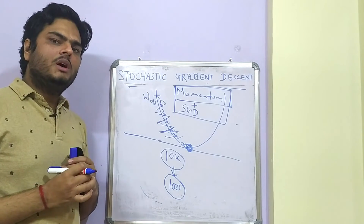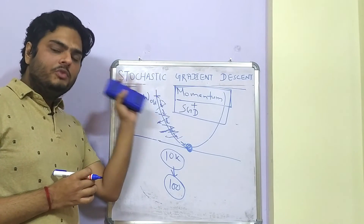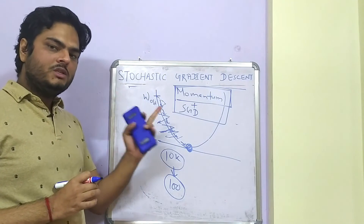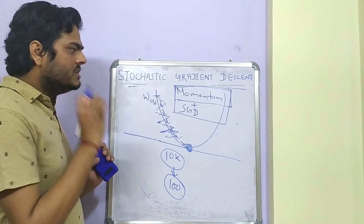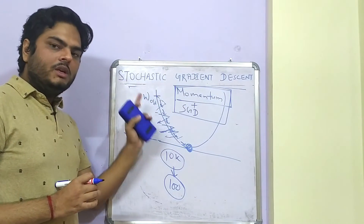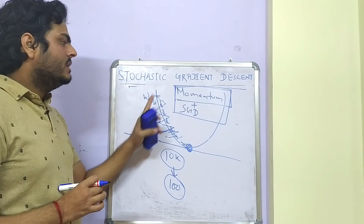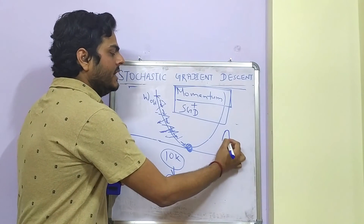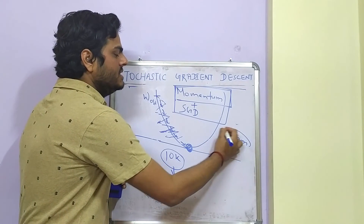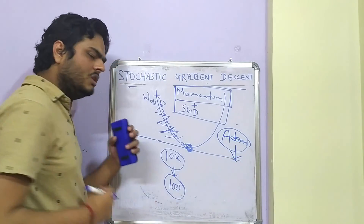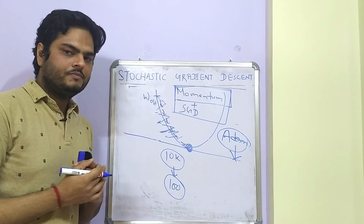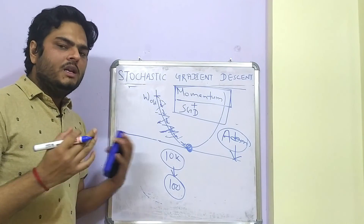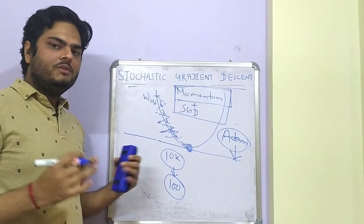I hope you've understood how gradient descent works. If you have any doubts, I strongly recommend you watch my last video on gradient descent to understand gradient descent, stochastic gradient descent, mini-batch gradient descent, and gradient descent with momentum. These are important before we move to Adam and other optimizers. If you have any doubts, write in the comments. See you all in the next video — till then, stay safe and take care.